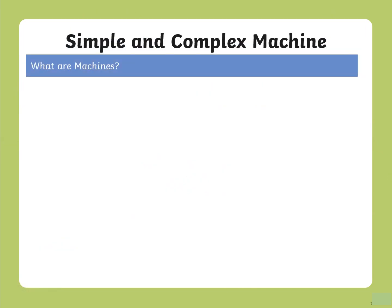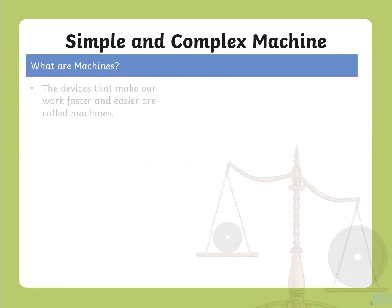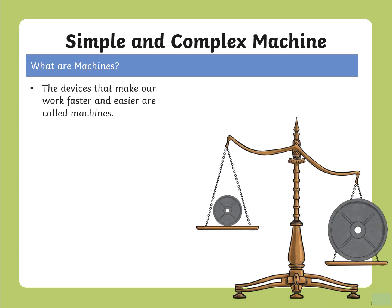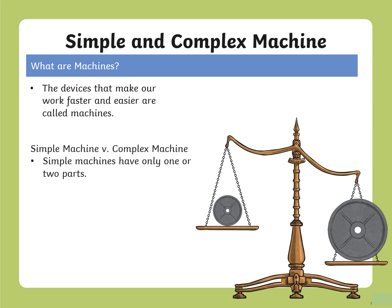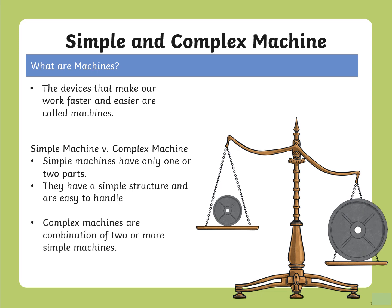Simple machines versus complex machines. The devices that make our work faster and easier are called machines. Simple machines have only one or two parts — they have a simple structure and are easy to handle. Complex machines are a combination of two or more simple machines; they have a complicated structure and are not very easy to handle.